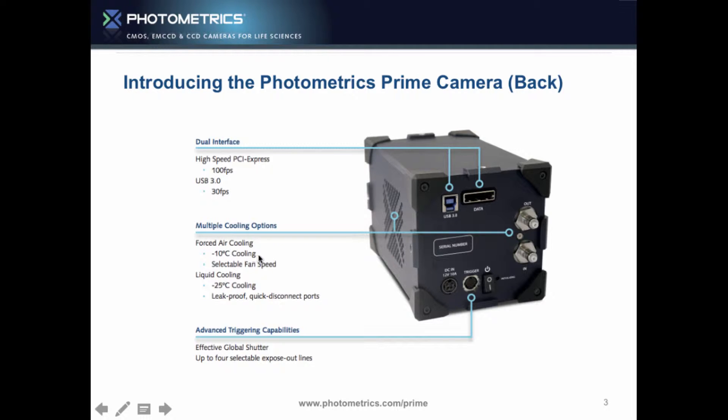Cooling options. We're at minus 10 on air cooling. Actually, I think it's minus 15 now. The selectable fan speeds are in here as well, so you can change the different fan speeds if there's any form of oscillation. We also actually have the lowest vibration we can measure on this camera compared to competitors. The liquid cooling, I think that's market leading as well, minus 25. You really want no vibration.